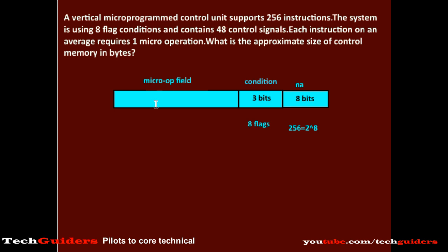In the fully encoded approach, the number of bits required in the micro-operation field for 48 control signals is ceiling of log 48 to the base 2.